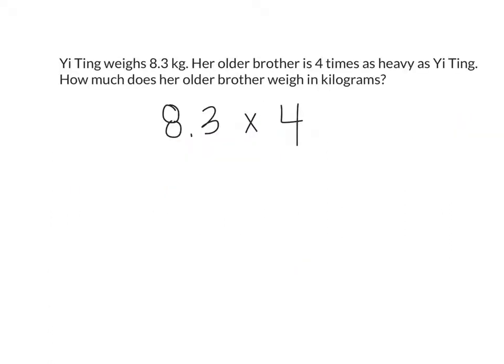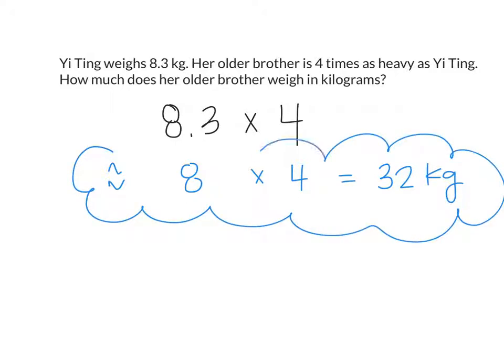To solve this math problem, we have to do eight point three times four because we know her brother is four times as heavy as her, so we have to multiply her weight by four. Let's first use estimation to find out about how big our answer should be. Eight point three is pretty close to what whole number? Eight. And then four is already a whole number. So what is eight times four? 32. So our answer should be pretty close to 32 kilograms. Let's keep that estimation in our brains.